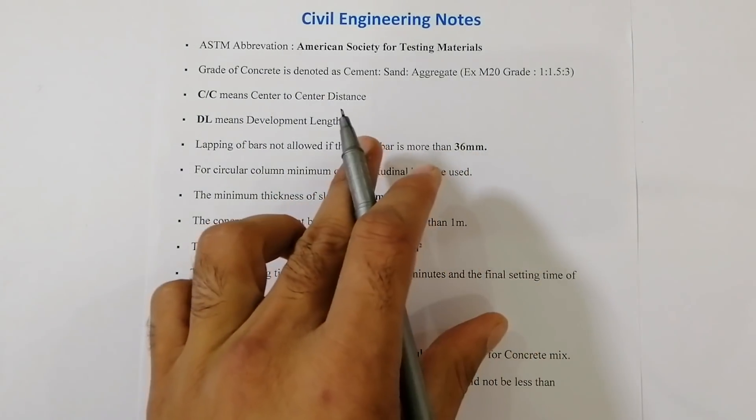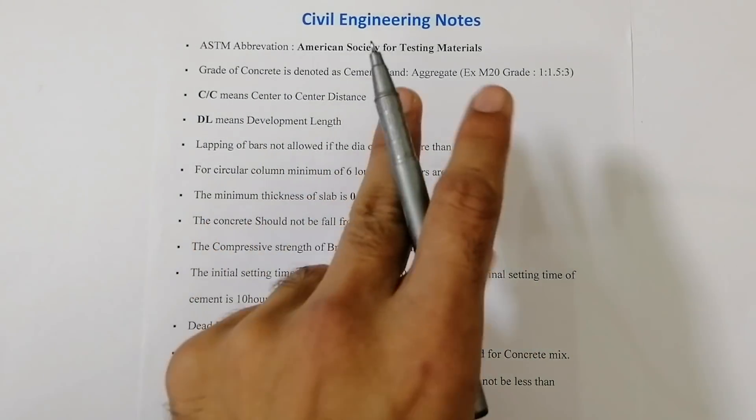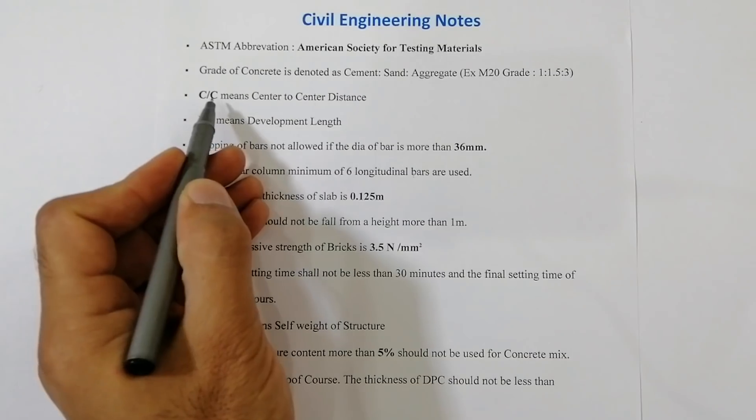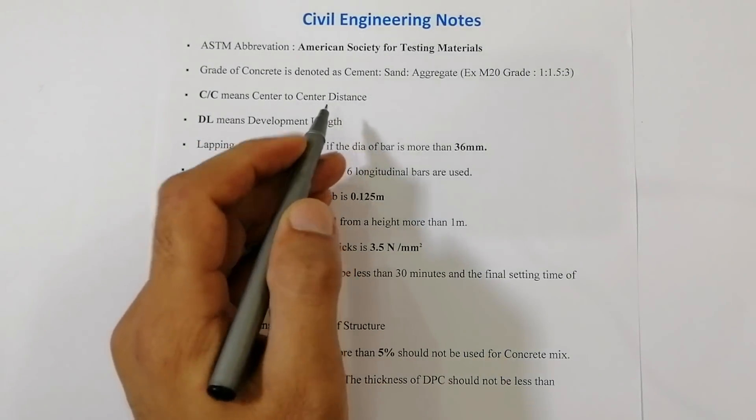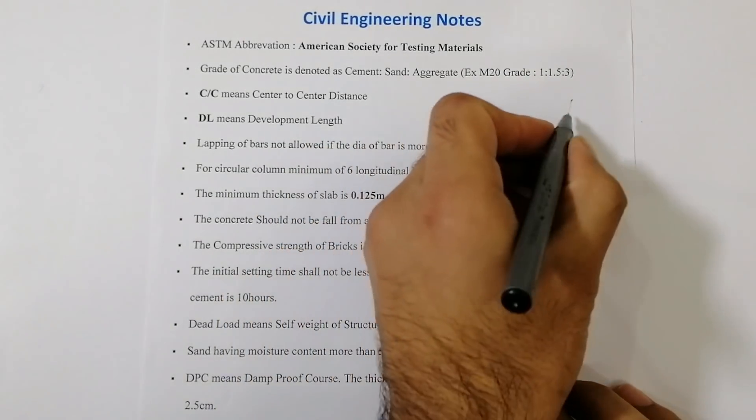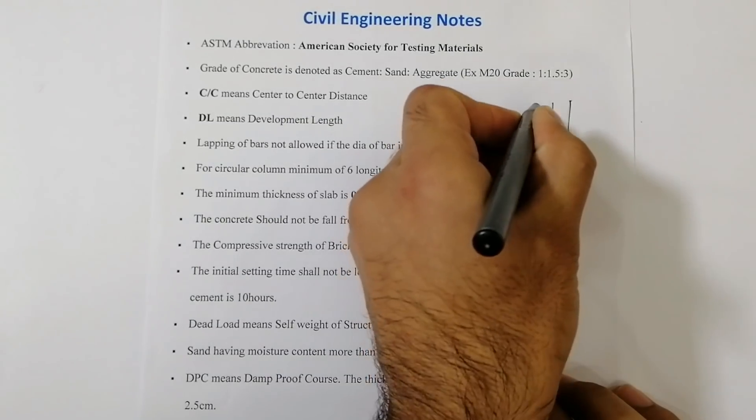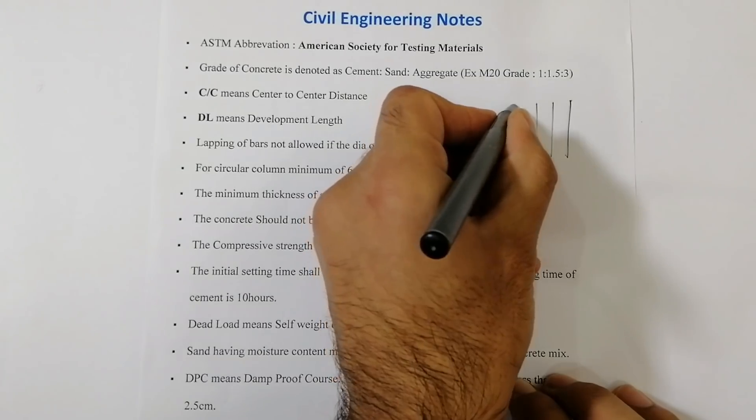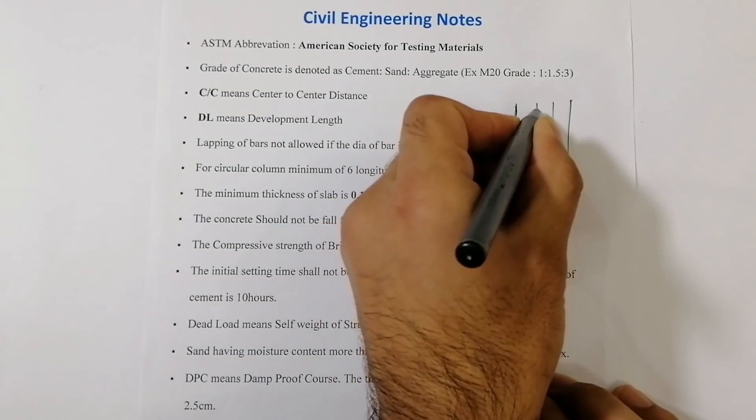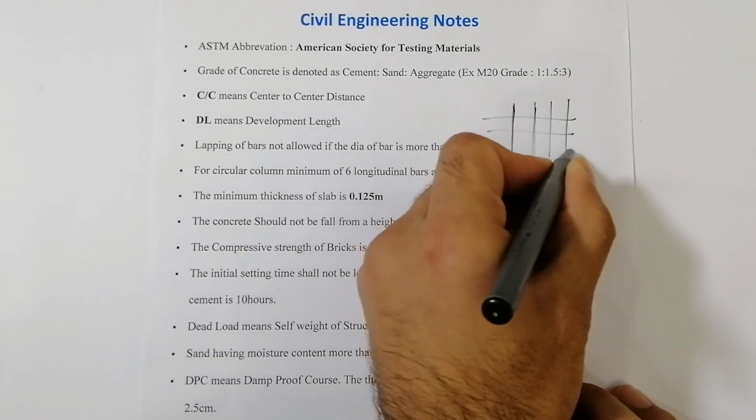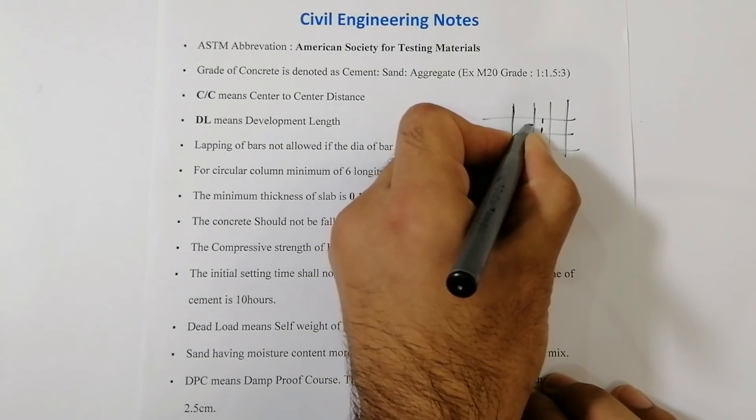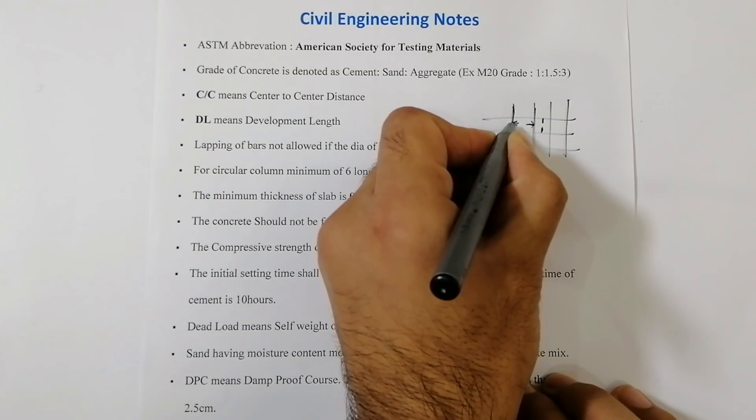The third one is C/C. It means center to center distance between two steel bars, especially for main bars and distribution bars. C/C means center to center distance. For example, you can see this - these are center to center distance from one steel bar center to other center. It's called center to center distance.